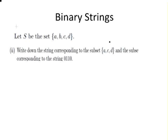Write down the string corresponding to the subset {a, c, d}. Well, here A is present so that's a 1, B is not present so that's a 0, and C and D are present, so that is 1 and 1 respectively. So just to be clear: {a, c, d}.